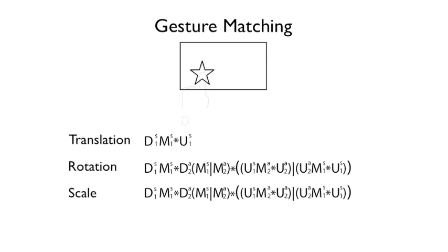Proton then performs gesture recognition by comparing the gesture regular expressions with the input stream. Here, the system detects that the input stream has matched the translation gesture, but not the rotation or scale gestures.